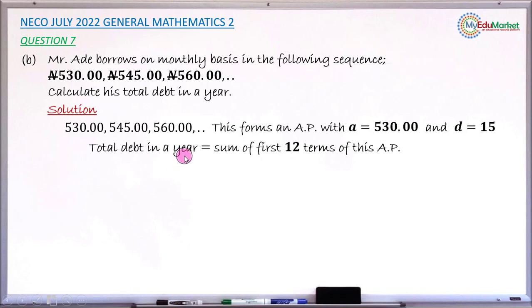So total debt in that year would now be sum of the first 12 terms of this very AP. And the formula for finding sum is given as Sₙ equals n over 2...